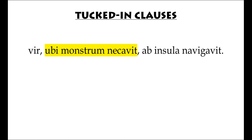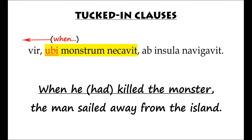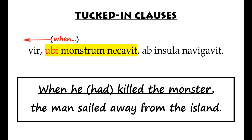Here's another example: 'Vir ubi monstrum necavit ab insula navigavit.' So we've got the tucked-in clause there, tucked inside another clause — that's why it's called a tucked-in clause. It begins with ubi, that's the conjunction meaning 'when.' There's no question mark, so it must be 'when he killed the monster.' Let's bring that right to the front. The man — that's presumably Theseus — sailed away from the island.